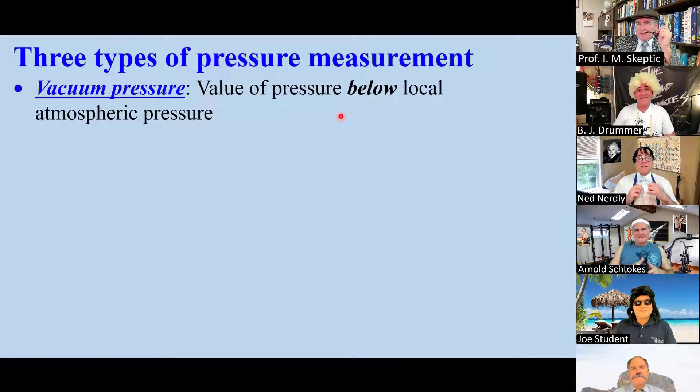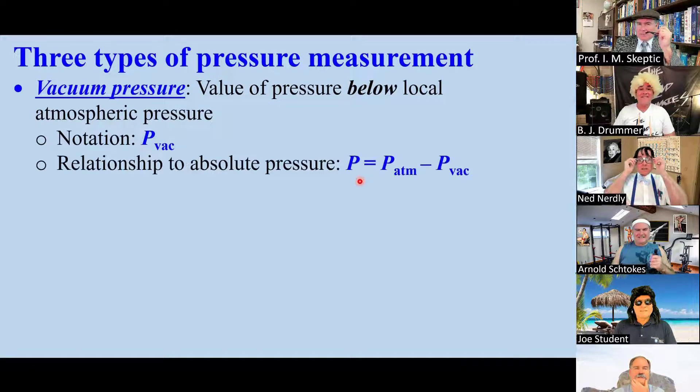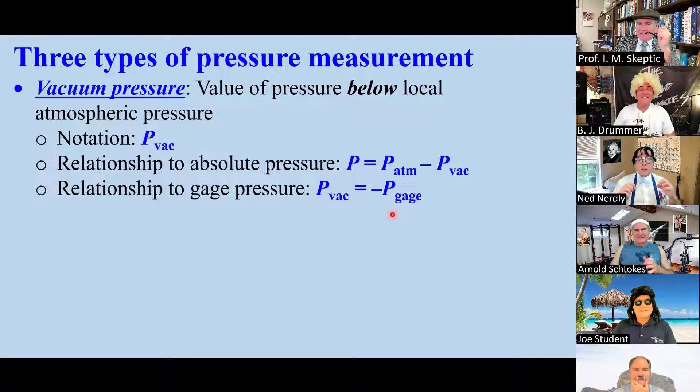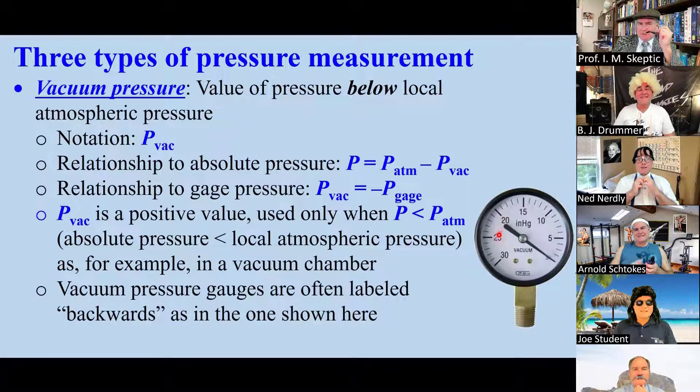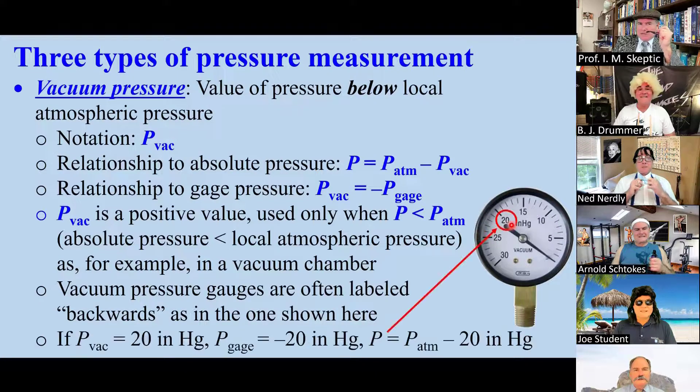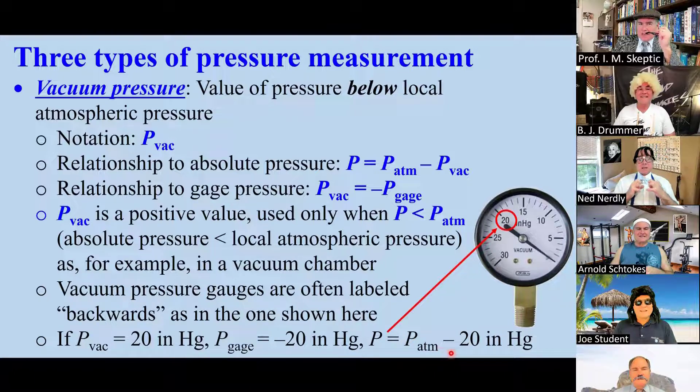Vacuum pressure is the value of pressure below atmospheric. The notation is P-vac. The relationship is P equals P-atmosphere minus P-vac, which is exactly the negative of P-gauge. P-vac is a positive value used only when the pressure is below atmospheric, as, for example, in a vacuum chamber. Vacuum gauges are often labeled backwards, like this one. A reading of 20 inches of mercury means P-vac is 20, P-gauge is negative 20, and the absolute pressure is P-atmosphere minus 20 inches of mercury.